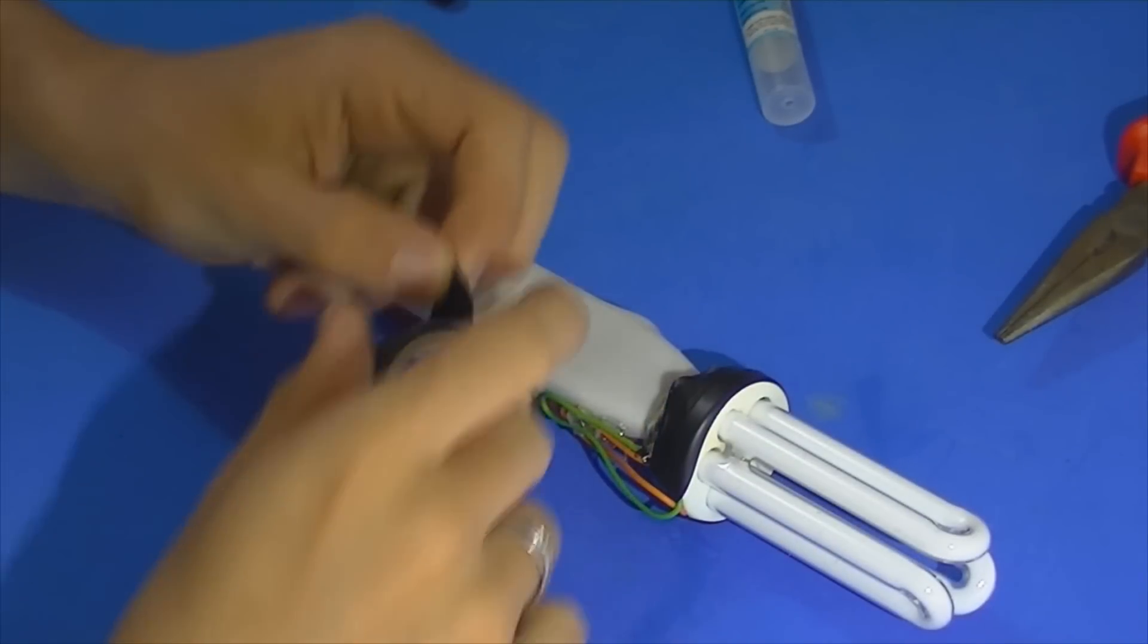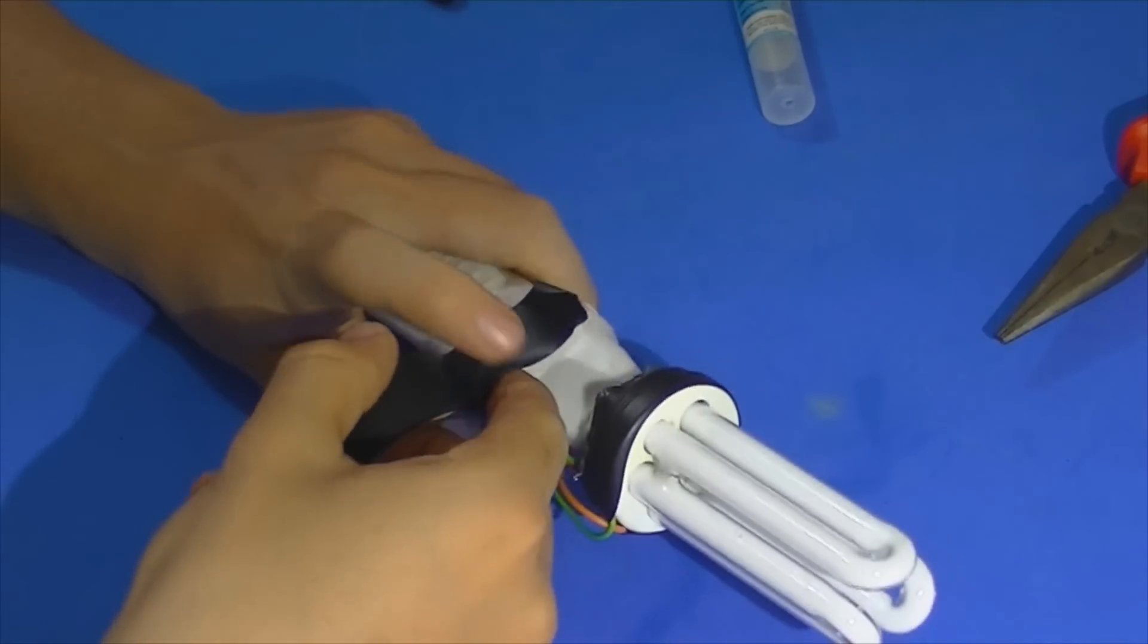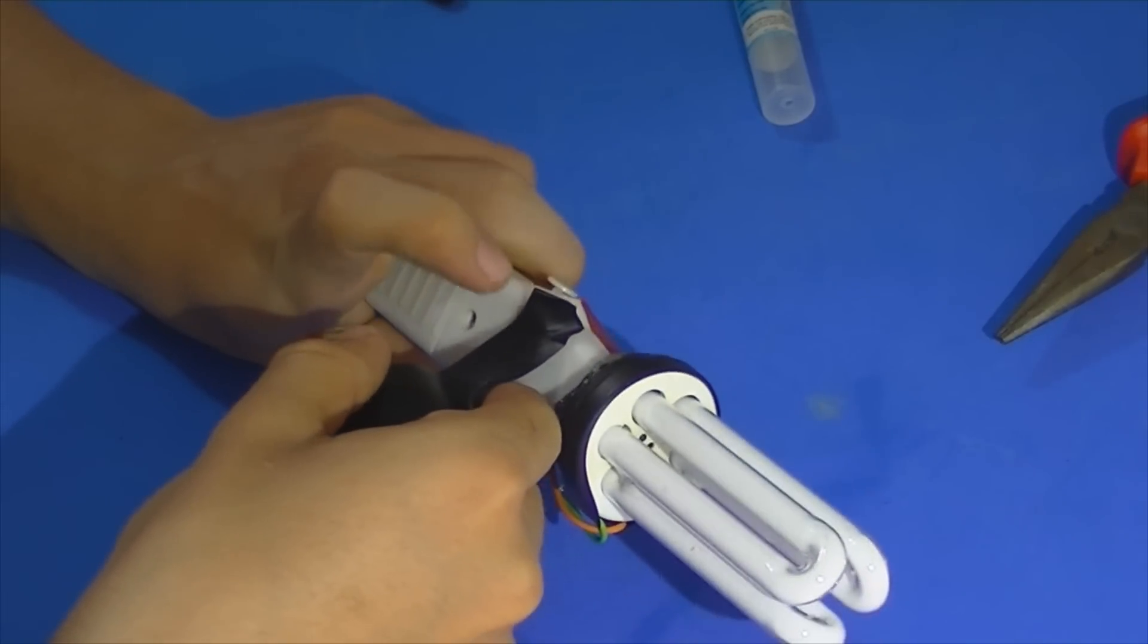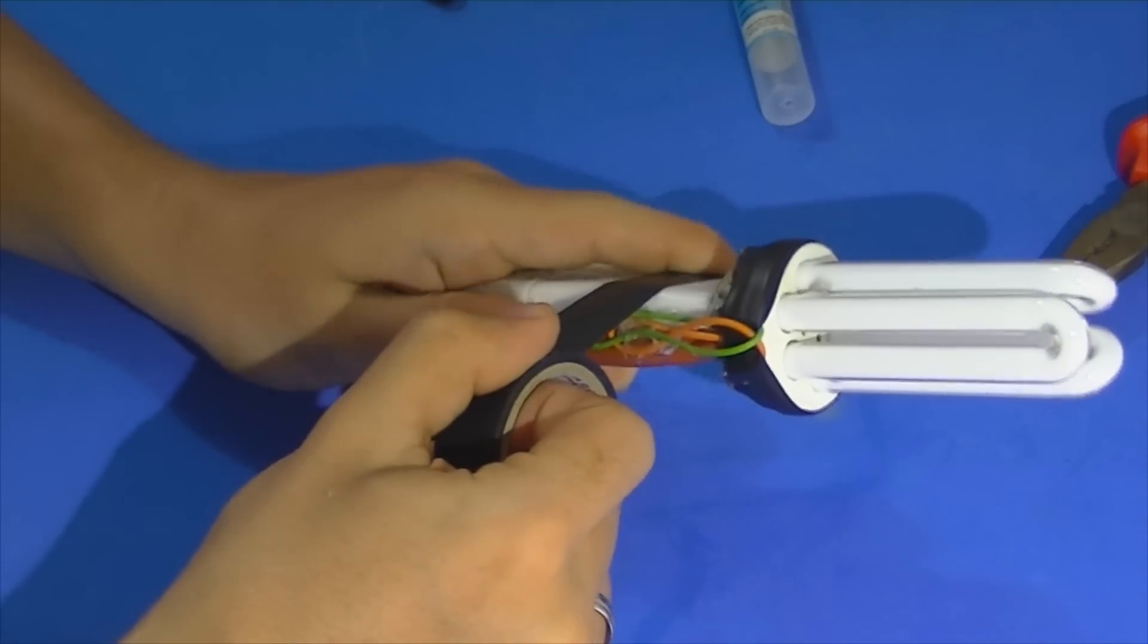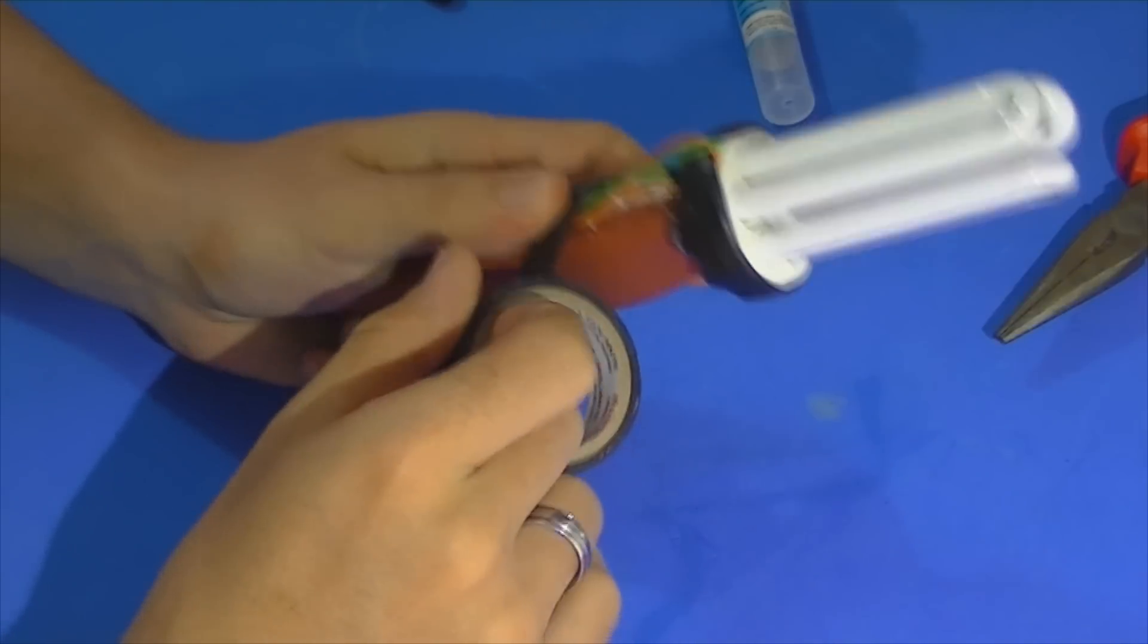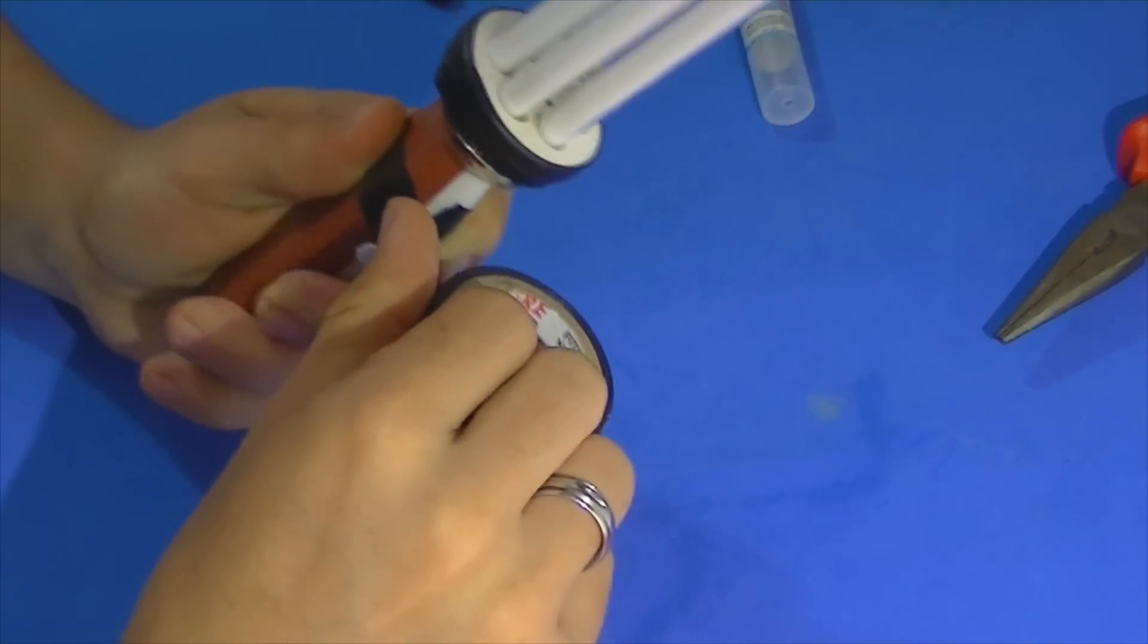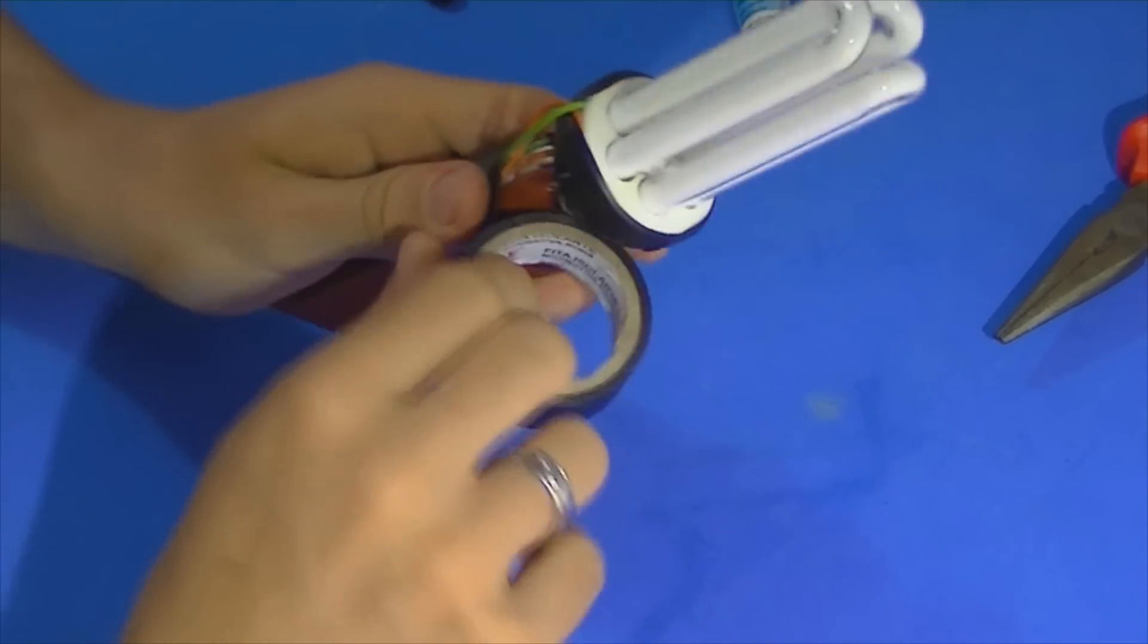Depois de seco, podemos pegar mais um pouquinho de fita isolante, dobrar aqui o fio para trás, passar fita isolante aqui em cima do fio.